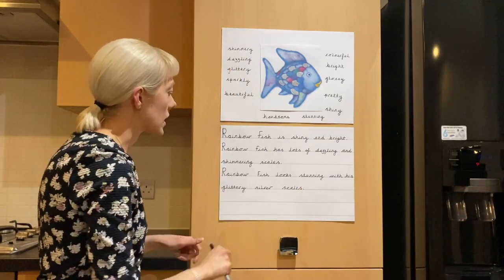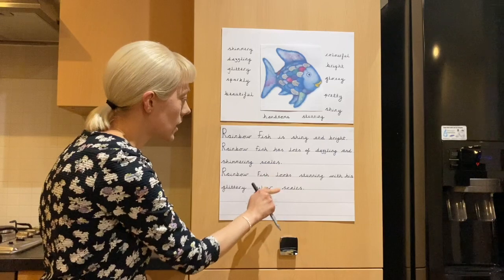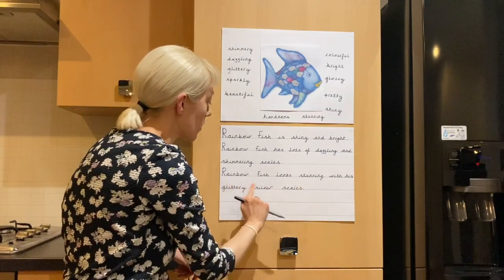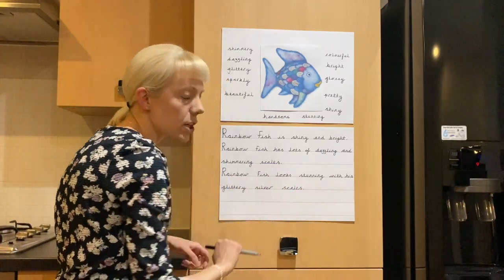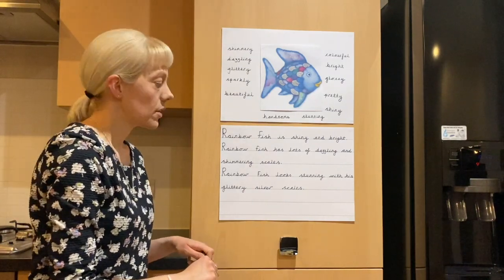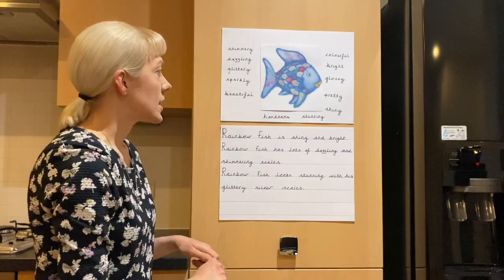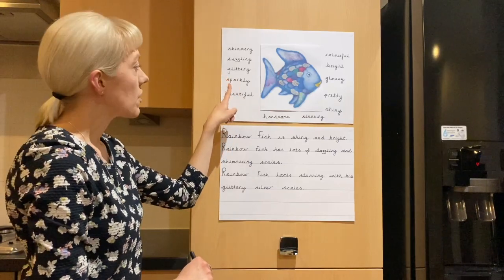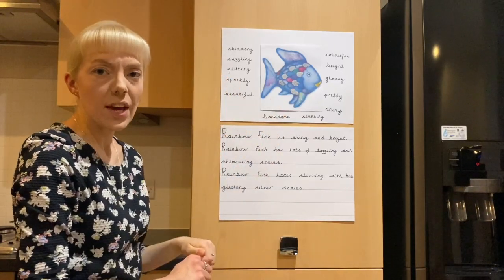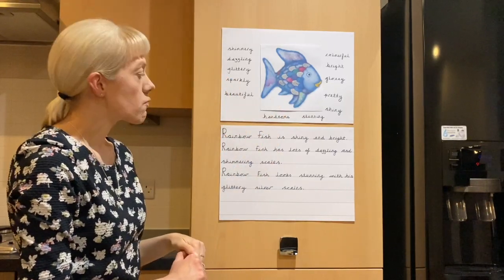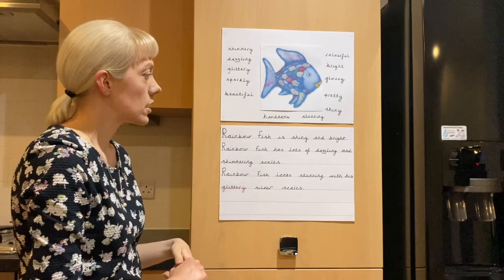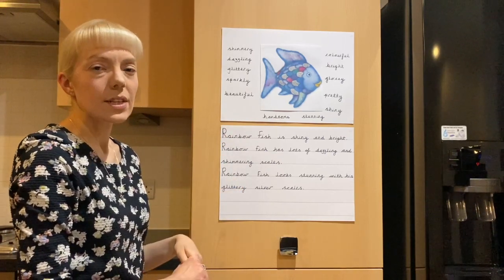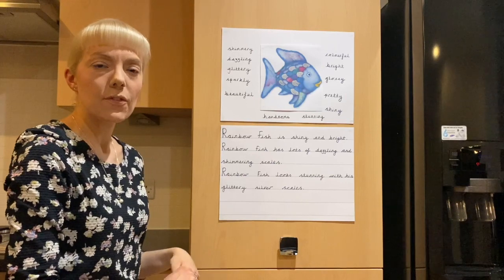Okay, and I've used a capital letter, finger spaces, I've used my phonics to help me sound and spell the words out, and I've finished with a full stop. So let's see how many adjectives — describing words — you can think of to describe Rainbow Fish, and then write some lovely sentences to describe what he looks like. I look forward to seeing all your beautiful writing. See you later!